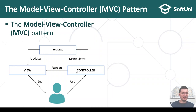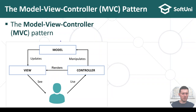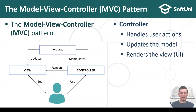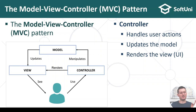The view shows something on the screen. The controllers take the user actions. The models hold data which is displayed by the view. Controllers collect user actions — such as opening a URL, clicking a button, or submitting a form — and do something on the server-side.